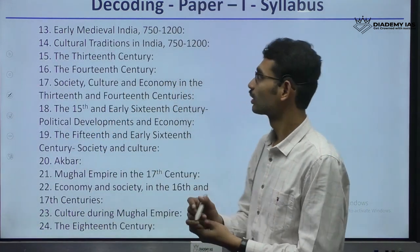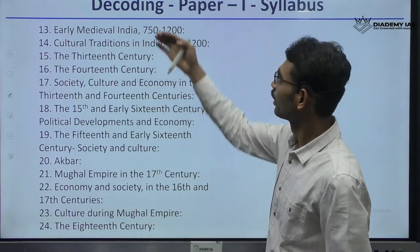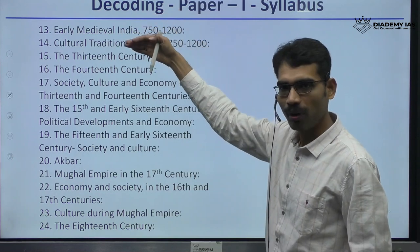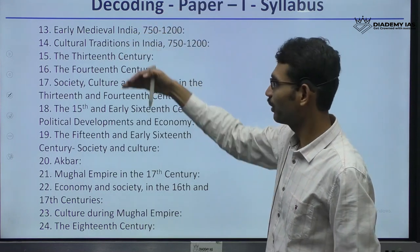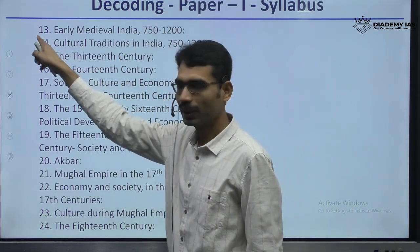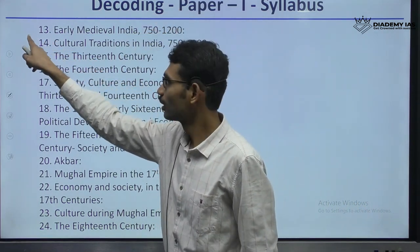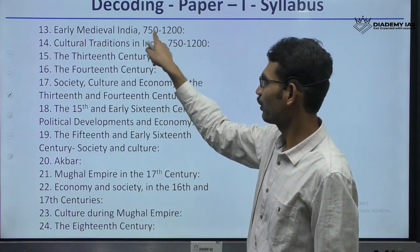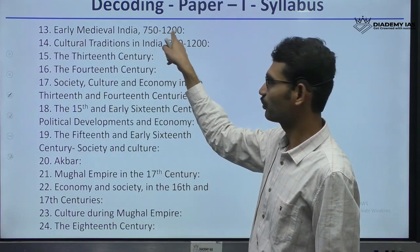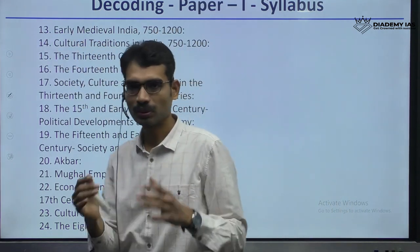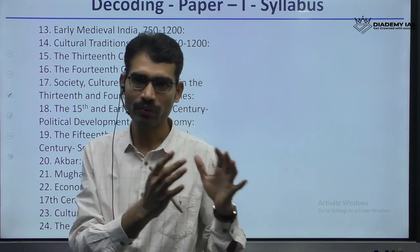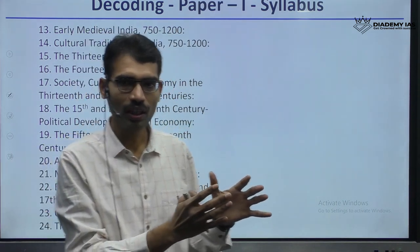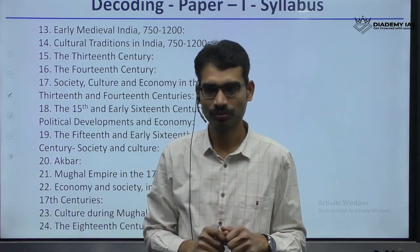If you see the syllabus, in Paper 1, Part B, Medieval India, this is the beginning. Unit 13, Early Medieval India, 750 to 1200. So that means up to 750, questions are related to the ancient part.